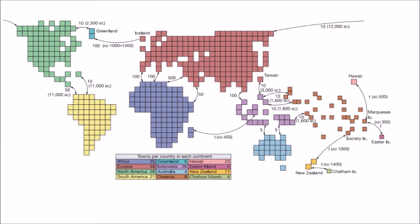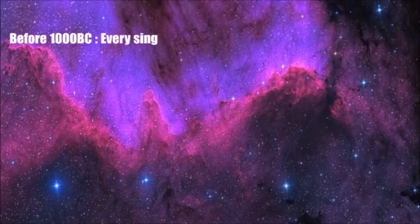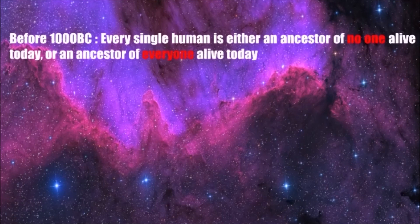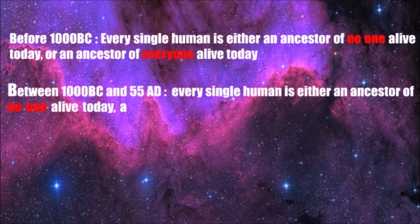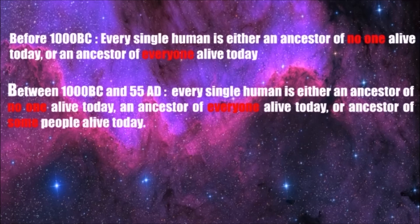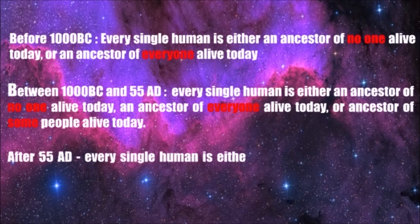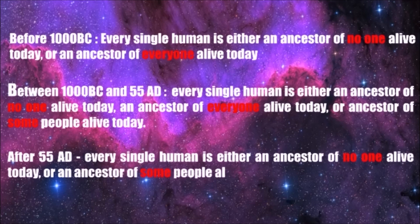They also discovered that it takes 1.7 times the total number of generations from the MRCA before every individual is either an ancestor of the whole world today or an ancestor of no one alive today. What this tells us is that before 1000 BC, every single human is either an ancestor of no one alive today or an ancestor of everyone alive today. After 55 AD, every single human is either an ancestor of no one alive today or an ancestor of some people alive today. This means that we are all descendants of one single human who lived around 55 AD, and therefore we are all related — some more than others.